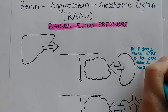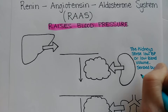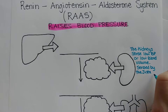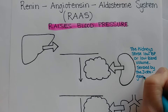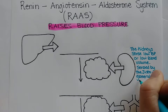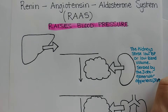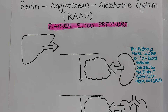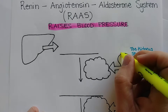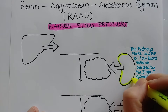This is sensed by the juxtaglomerular apparatus — you can just call that the JGA. So when the JGA senses low blood volume or low blood pressure, then the kidney will release an enzyme called renin.